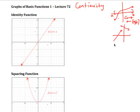Now if by chance the function does this kind of thing — when I trace through it and it stops here, then I've got to jump across to here to continue on — so at this point c, it's what we call discontinuous at that point.